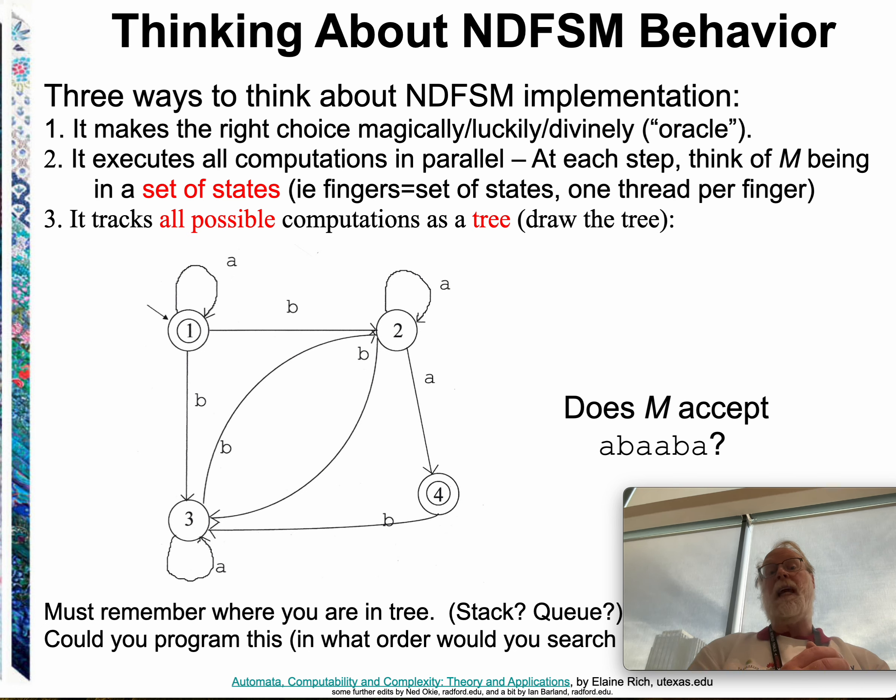You can also just say hey I'm going to execute all possible operations in parallel. When it comes to a choice I'm going to fork off the process and have one process take the first branch and another process take the second or third or fourth branch. And again that's a little bit like the fingers are each one parallel thread in that model where I have my fingers in different states and each figure goes to more and I might have to fork off my fingers into several fingers.